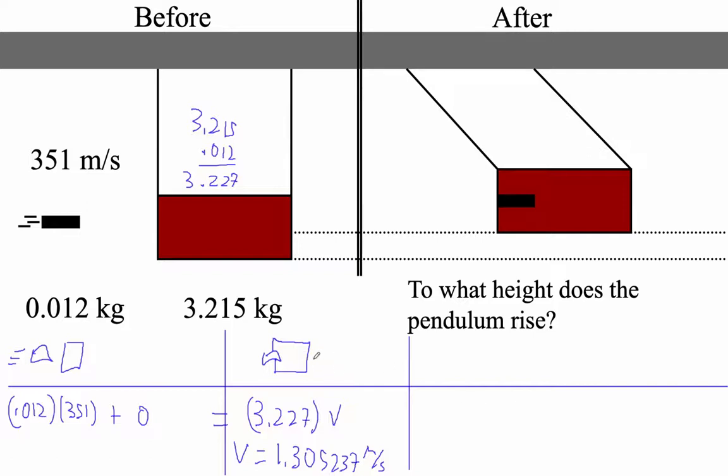Now, if we go from here to here, it's going to be a conservation of energy thing. So it goes from here to the block of wood has now risen and changed shapes strangely. It's swung from being like this to being like up at some angle like that, so it's got some height.